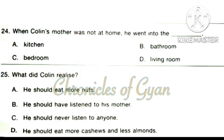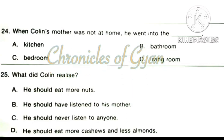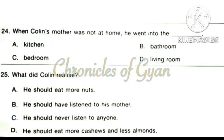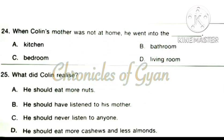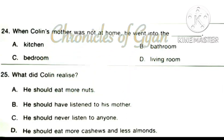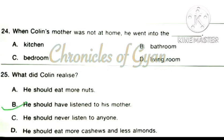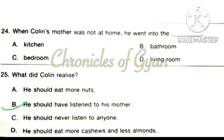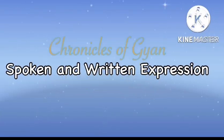Question 25: What did Colleen realize? We get the moral of the story here. Option B is the correct answer: He should have listened to his mother. The third section is spoken and written expression.